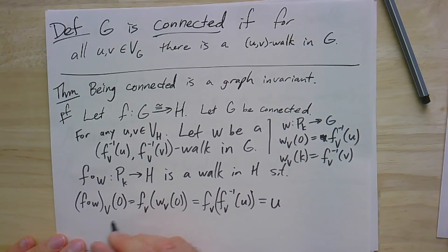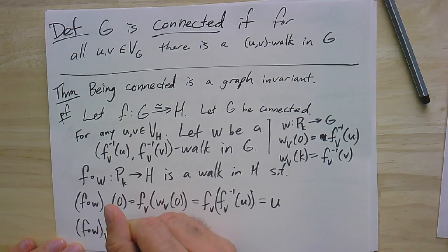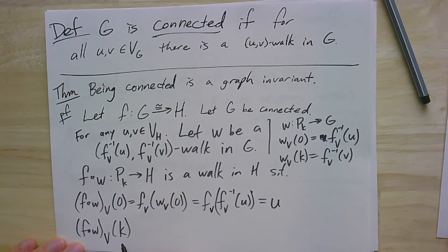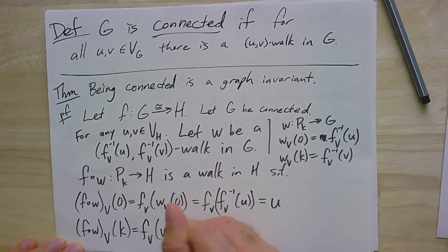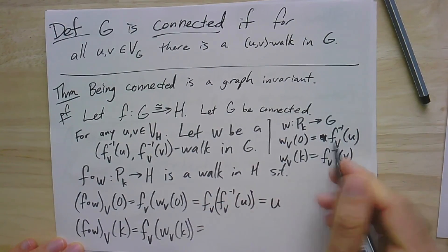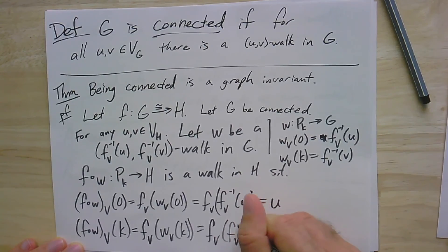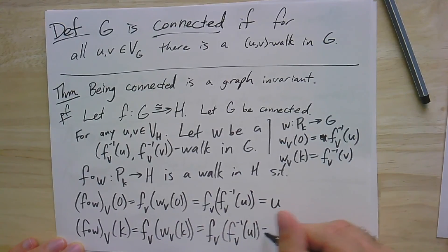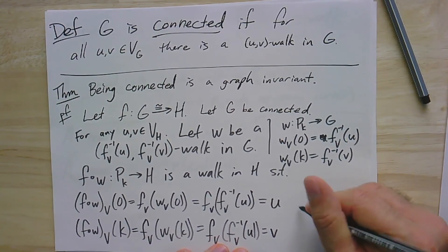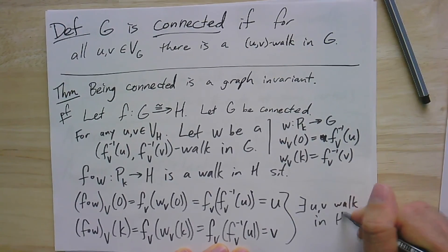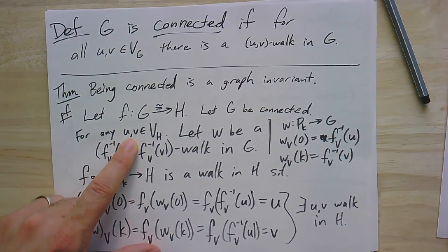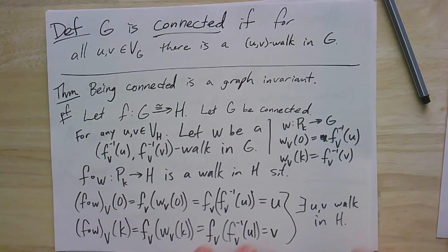And similarly, if I look at the end of this walk, F of W at k, the last vertex in the walk, and I work out the same thing, you'll see that it's going to be equal to v. So what that means is that this walk that I constructed in H is a walk that goes from u to v. So there exists a u v walk in H. Now, you'll notice that I just took any pair of vertices in H and I found a walk. So for any pair of vertices in H, I was able to find a walk. Therefore, H is connected.